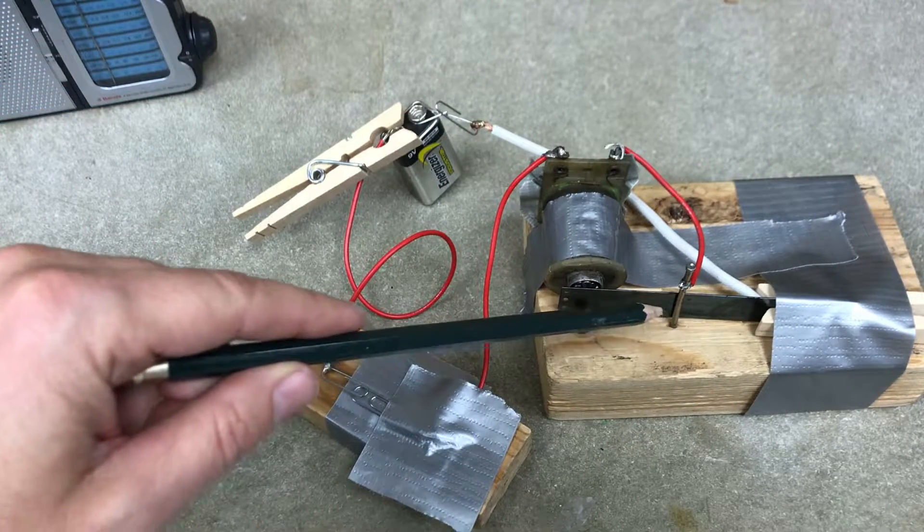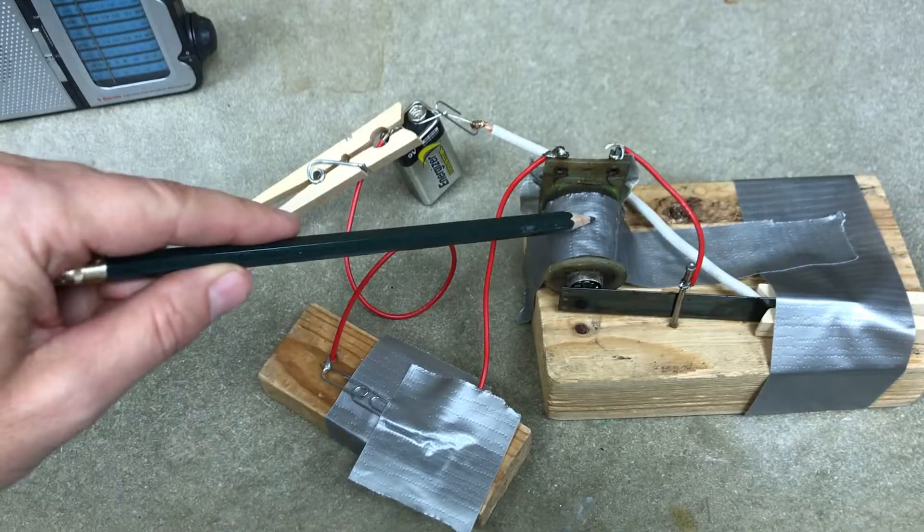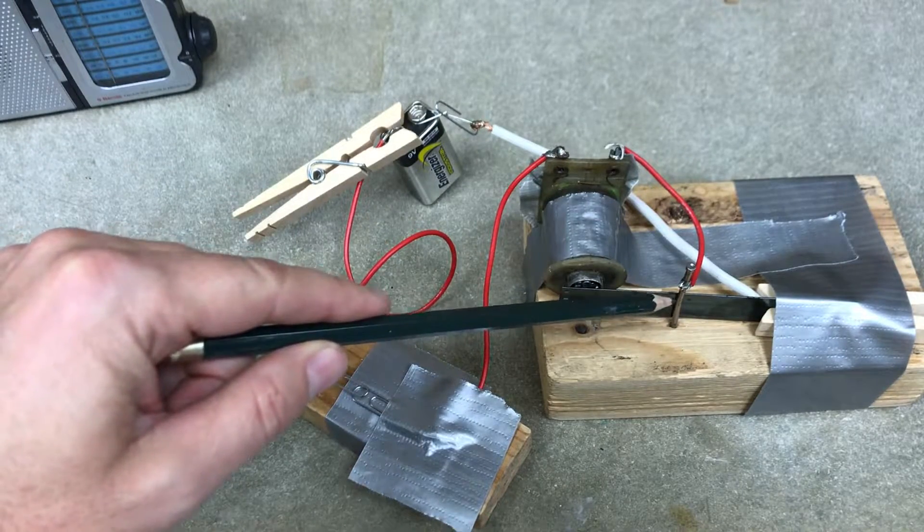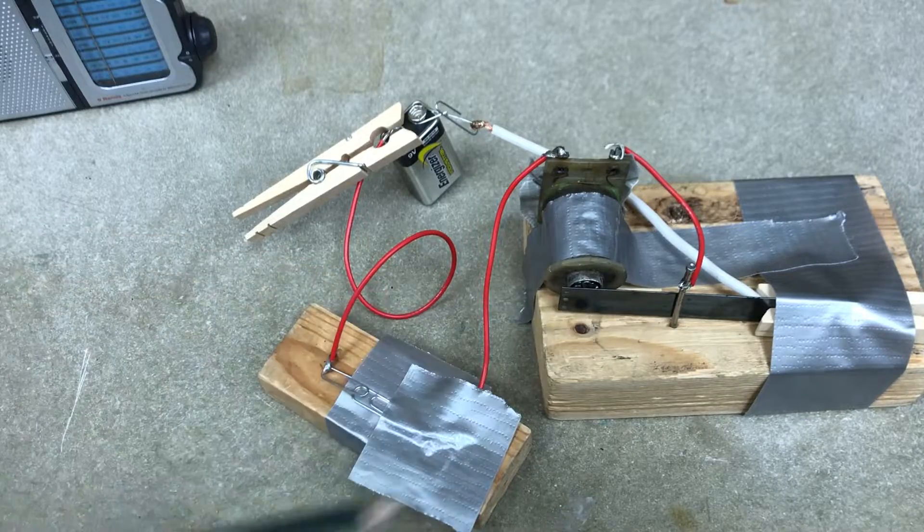So when I push this it runs a current through here, it turns on the electromagnet which pulls this which disconnects the current and then so it repeats all over again.